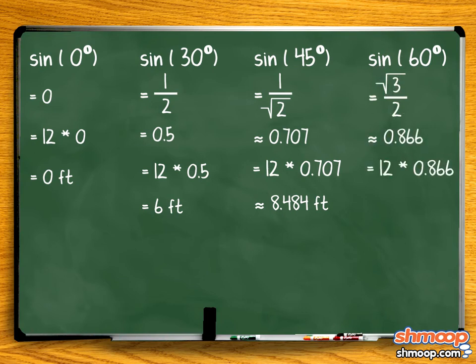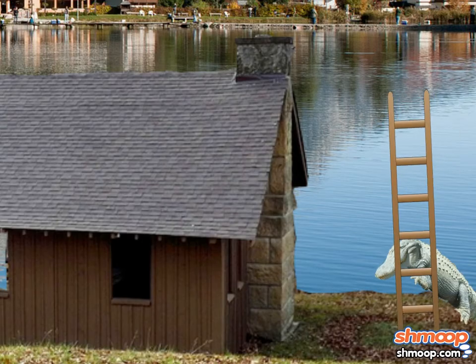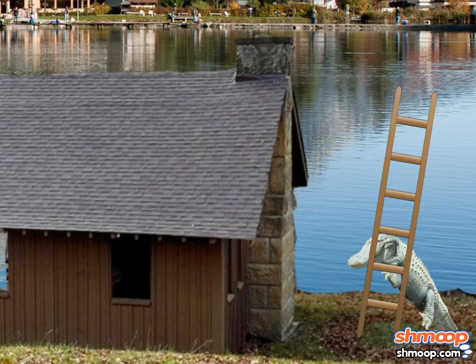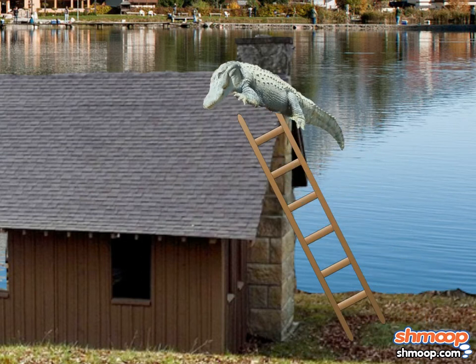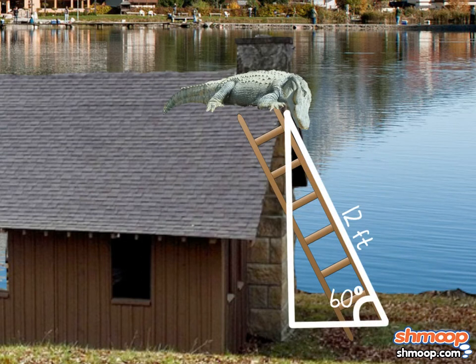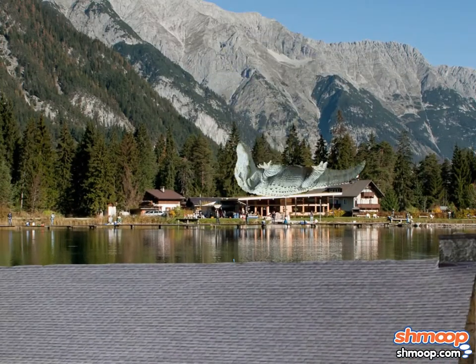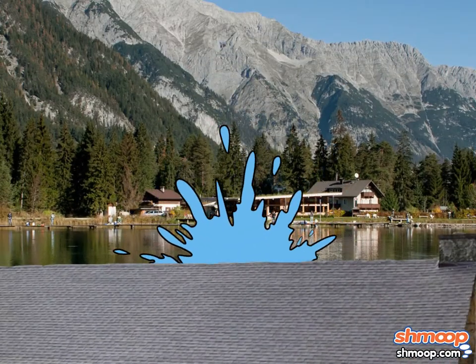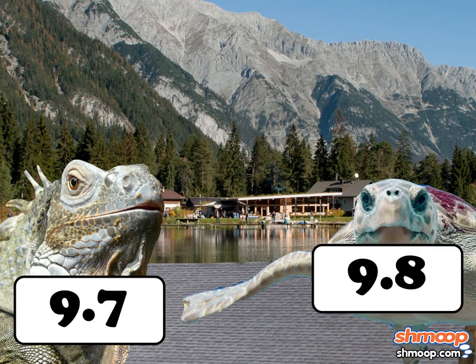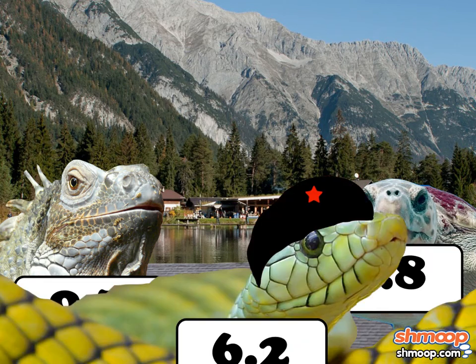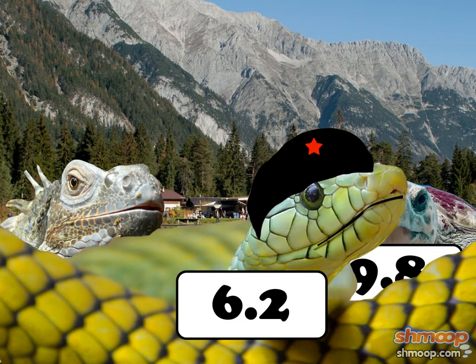Twelve times 0.866 is greater than ten. So once Darren can find a building at the water's edge where his ladder creates a 60-degree angle to the top of the roof, he'll be all set. Now all he has to worry about is getting a bad mark from the Russian judge — that guy is a notorious gator hater.